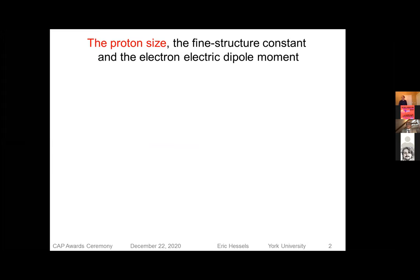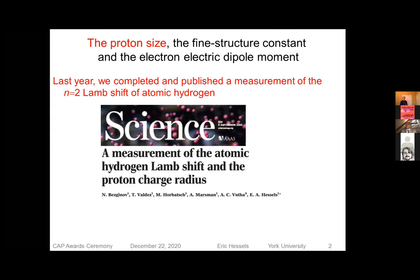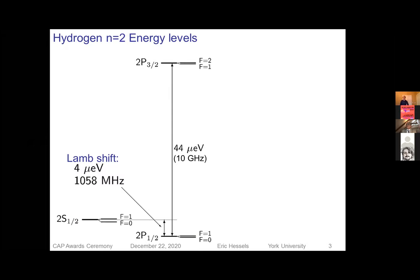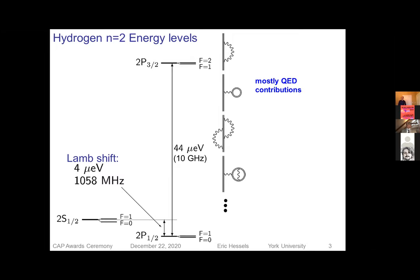So I'd like to start with the proton size. Last year we completed and published a measurement of the n equal to hydrogen lamb shift. And this can be used to determine the charge radius of the proton. So here are the n equal to hydrogen energy levels. We have the lamb shift here. I put it in these unusual units of micro electron volts. It's a small interval as you know, and it's almost entirely due to QED contributions. I've just shown a few diagrams of typical QED contributions. And it has a very small contribution due to the fact that proton has a finite size. So the electron can spend some of its time inside of the proton.